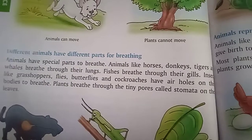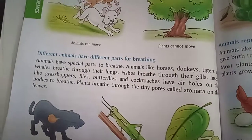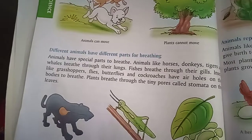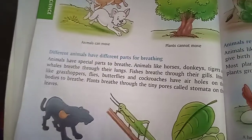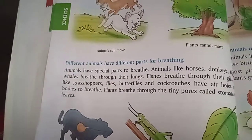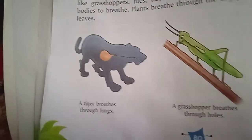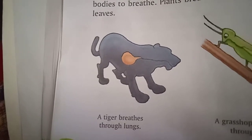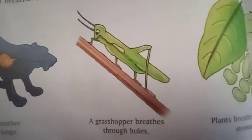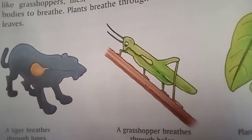Plants breathe through tiny pores called stomata on their leaves. A tiger breathes through its lungs. A grasshopper breathes through air holes on its body.